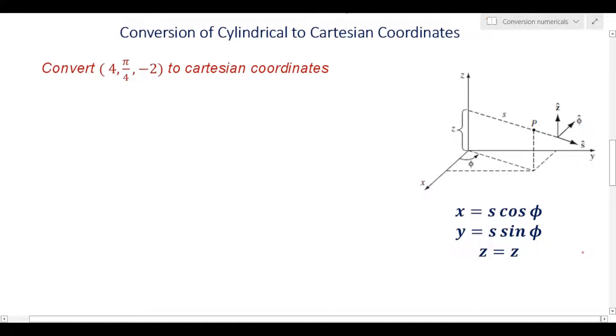Hello students, welcome to our channel Scholars Edu Guide. This is the continuation video on cylindrical coordinates. In the previous video we discussed cylindrical coordinates and how we represent the coordinates in a space. We know that in cylindrical coordinate where the symmetry is cylindrical, the point in a space is represented by s, phi, and z. This we have discussed in the previous video.